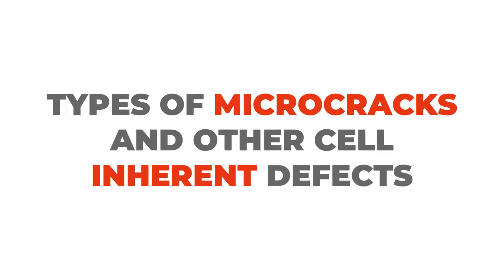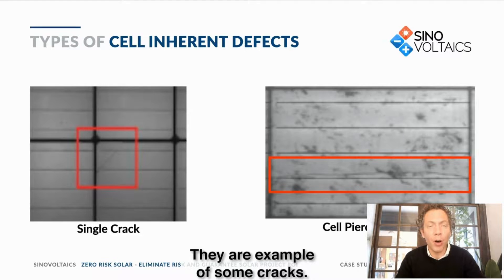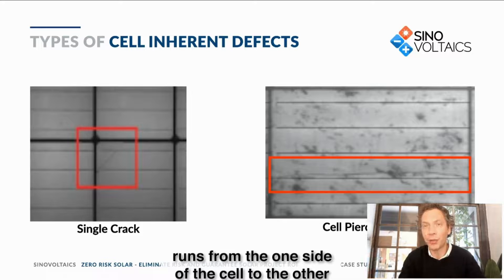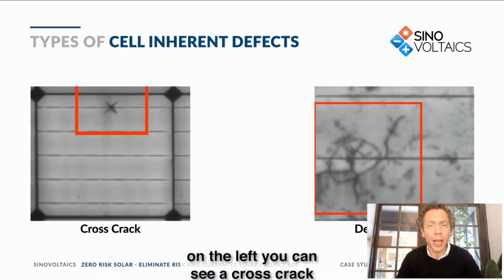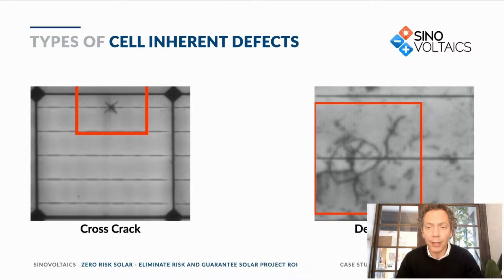Let me show you a few examples of cracks that can be made visible in EL images. Here are snippets of EL images: an example of a single crack on the left, a piercing crack which runs from one side of the cell to the other, a cross crack on the left which is a common crack type, and on the right a dendritic crack. These cracks typically get worse over time.